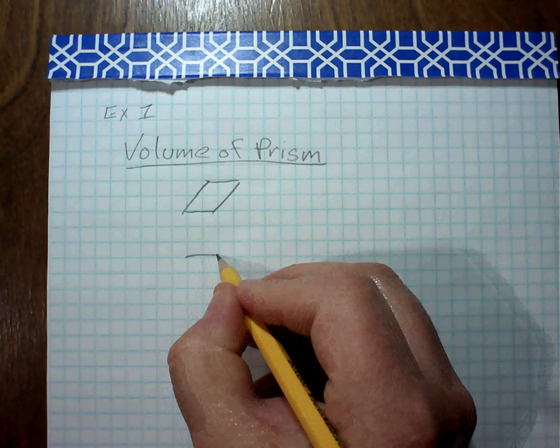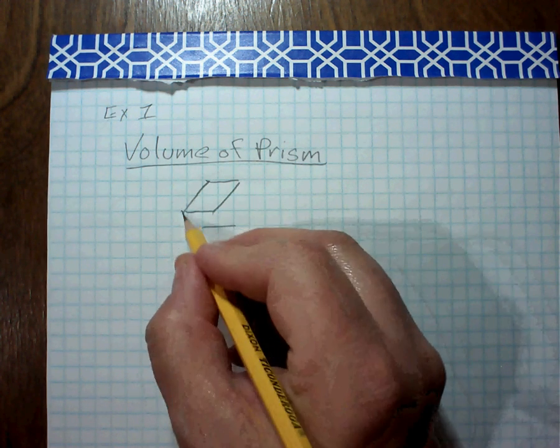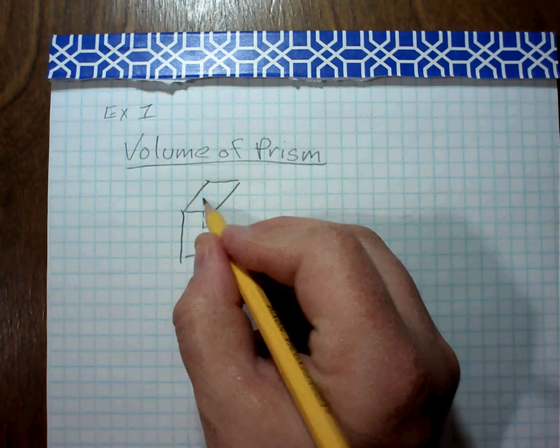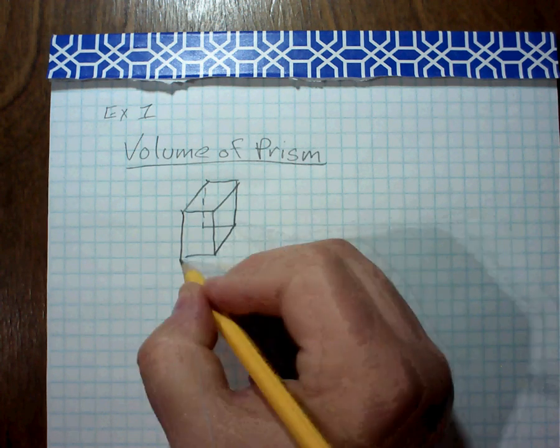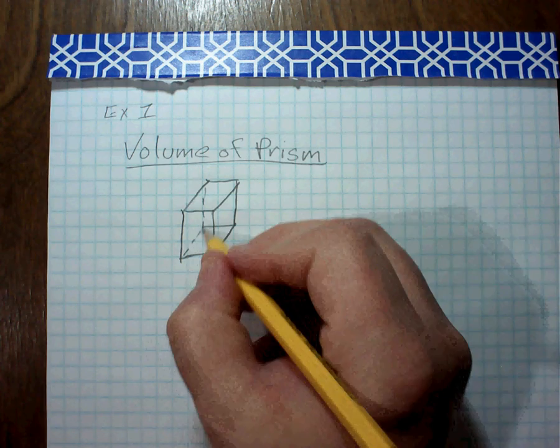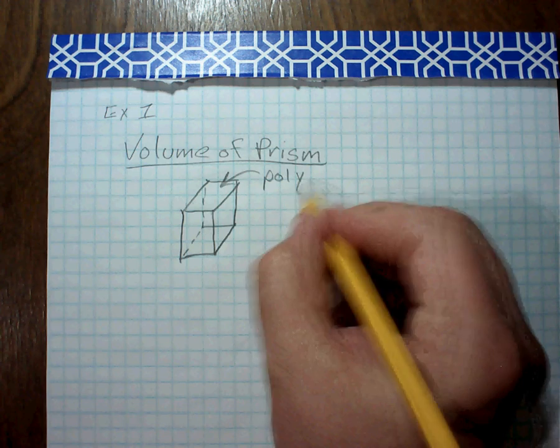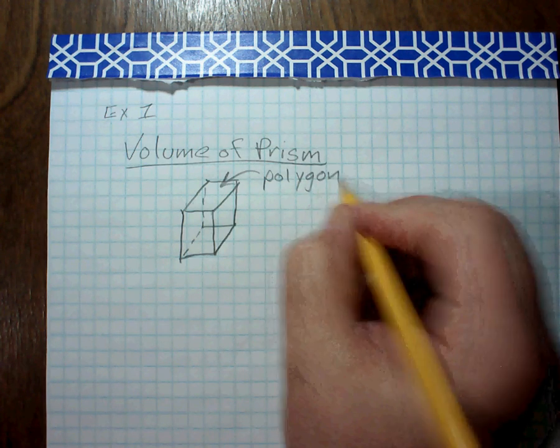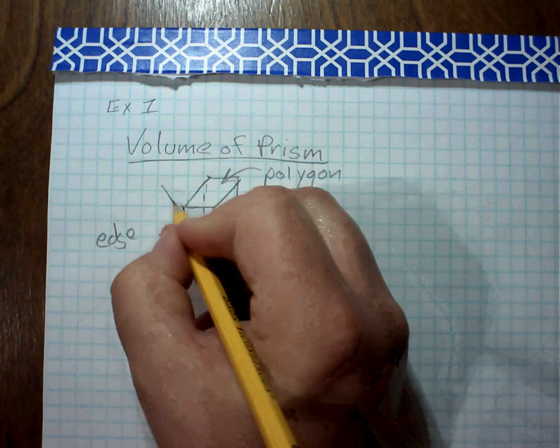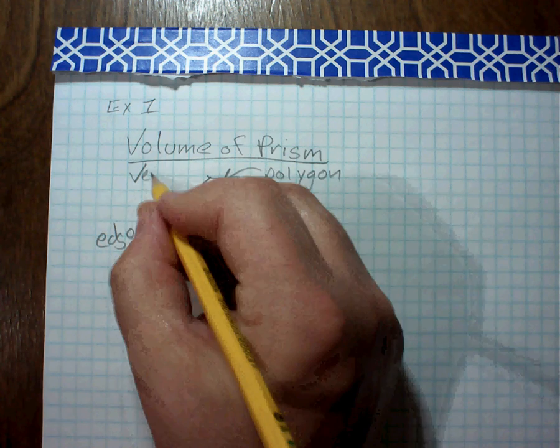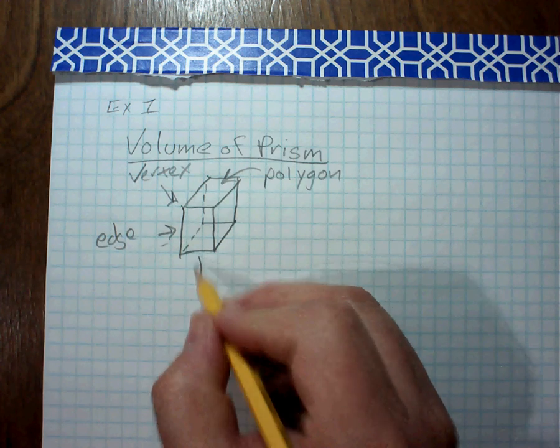Right? And they're kind of hard to draw too, so don't worry about if you draw perfectly or not. So this would be some sort of polygon as a base. This would be an edge. Remember that the corner is called the vertex. And the flat parts are called the faces.